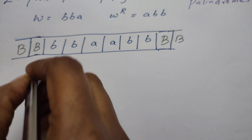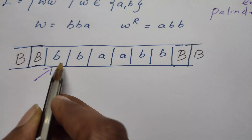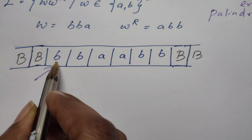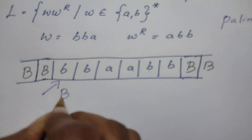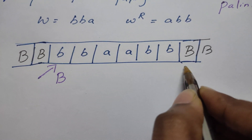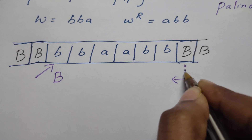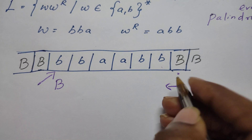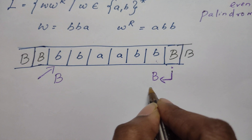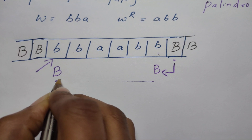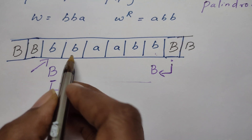Let us discuss the logic before designing the Turing machine. The read-write head points to the first symbol. In this example the first symbol is b. When it reads the first symbol — whether a or b — it is replaced by blank, and the read-write head moves right until it finds a blank symbol. Once it finds the blank, the head moves left, and the first symbol it encounters must match the original.